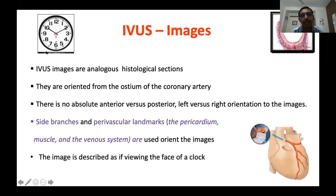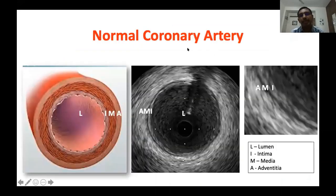There is no absolute anterior-posterior or right-left orientation to IVUS images. We describe images as if viewing the face of a clock — for example, an abnormality extending from 2 o'clock to 5 o'clock position, or from 7 to 10 o'clock position. We use side branches and perivascular landmarks such as pericardium, muscle tissue, and the venous system to orient ourselves inside the coronary artery.